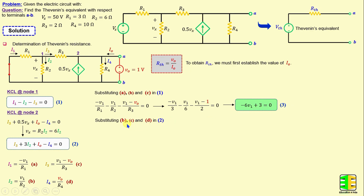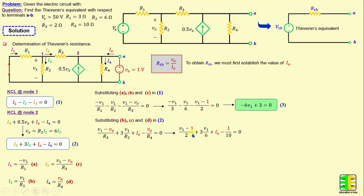Now by substituting B, C, and D into equation 2, we can write: (V1 minus V0) over R3 plus 3 times V1 over R2 plus IO minus V0 over R4 equals 0. Replacing V0 and the resistors with their numerical values and simplifying, we obtain: 10 times V1 plus 10 times IO minus 6 equals 0.